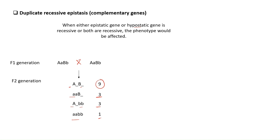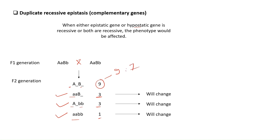Now, how does the ratio change in duplicate recessive? Duplicate recessive occurs when either the epistatic or hypostatic gene is in a recessive state. You can see this in the 3 where the epistatic gene is recessive, the 3 where the hypostatic gene is recessive, and the 1 where both are recessive. The 9 remains 9, but these three groups add up, giving a new ratio of 9:7.